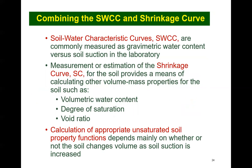The primary tool for estimating unsaturated soil property functions is the soil water characteristic curve. The SWCC is commonly measured and plotted as gravimetric water content versus soil suction ranging from about 0.1 kilopascals to 1 million kilopascals. Combining the measured SWCC with the shrinkage curve allows the SWCC to be calculated and plotted in terms of volumetric water content, degree of saturation, and void ratio — all versus soil suction — yielding a family of possible soil water characteristic curves.